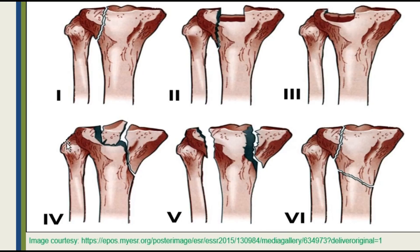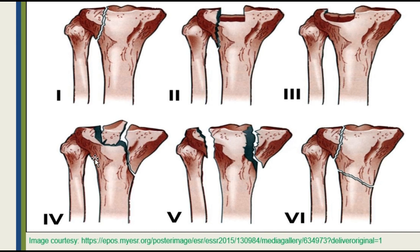According to Schatzker, there are six types. The tibia and fibula are oriented such that the proximal end has a lateral plateau on the fibula side and a medial plateau on the opposite side. In Type 1, there is a split fracture of the lateral plateau. In Type 2, there is a split plus depression on the lateral plateau. In Type 3, there is only depression present at the lateral plateau.